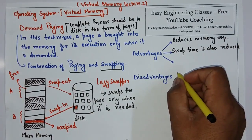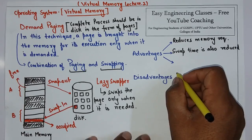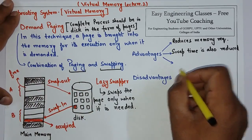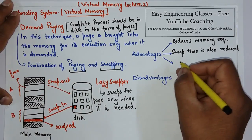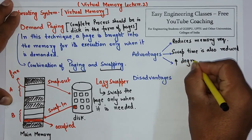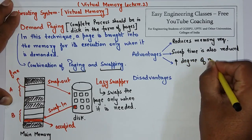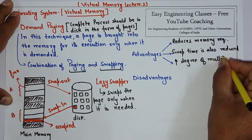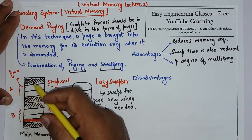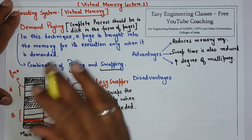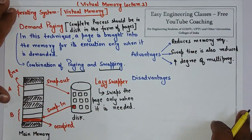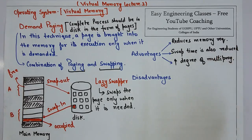The third advantage is it increases the degree of multiprogramming. This is the best advantage — because now many processes can run in the main memory at a single point of time. So these are the advantages.